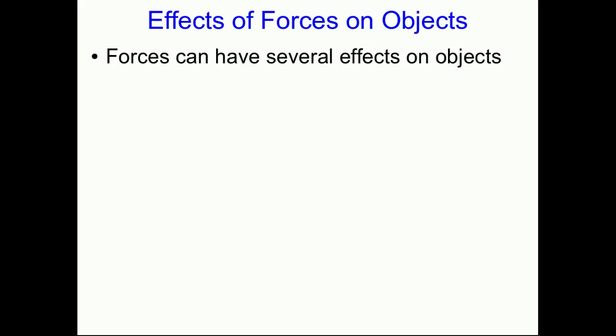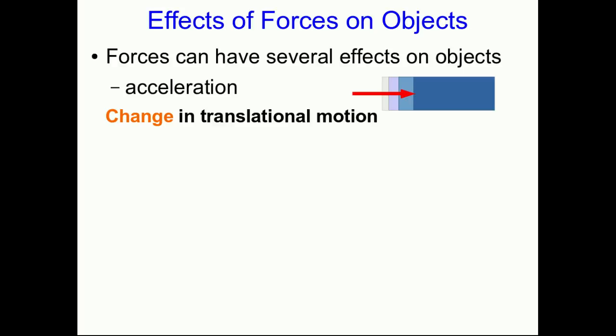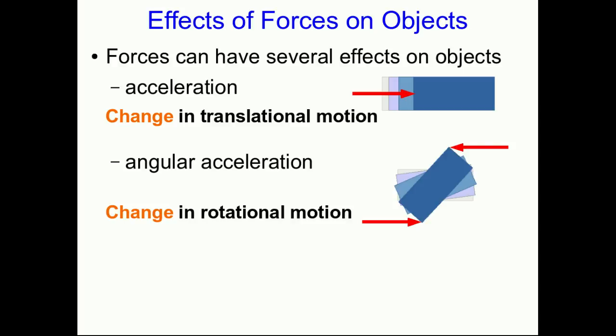One reason to understand translational equilibrium is to avoid being fooled in situations where objects aren't accelerating, even though there are many forces acting on them. Forces can cause objects to change their velocity, or in other words accelerate, and that's a change in the translational motion of the object. But even when the vector sum of forces is zero, if the forces aren't lined up with each other, they can cause the object to accelerate angularly, or change its rotational motion.